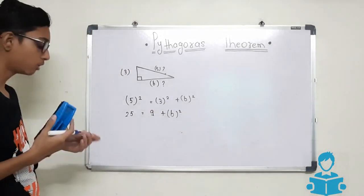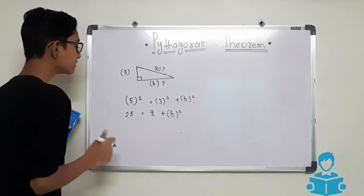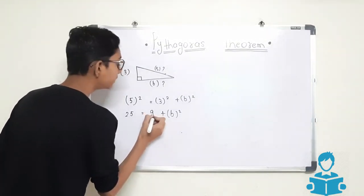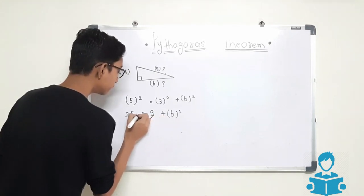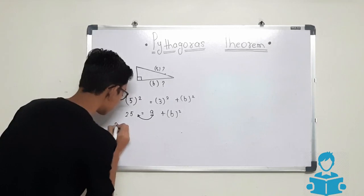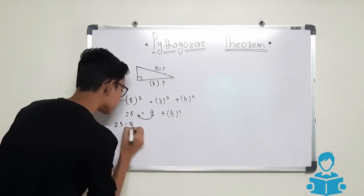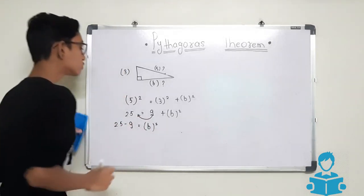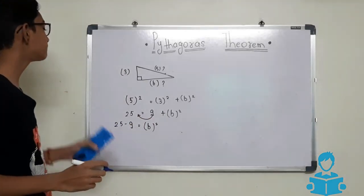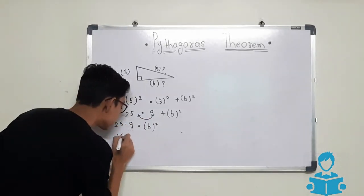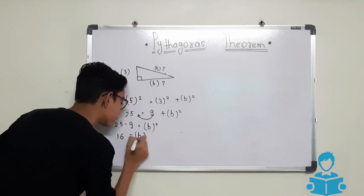We will take this 9 to the left hand side. So it will become 25 minus 9 is equals to B square. The value of 25 minus 9 is 16, so 16 is equals to B square.